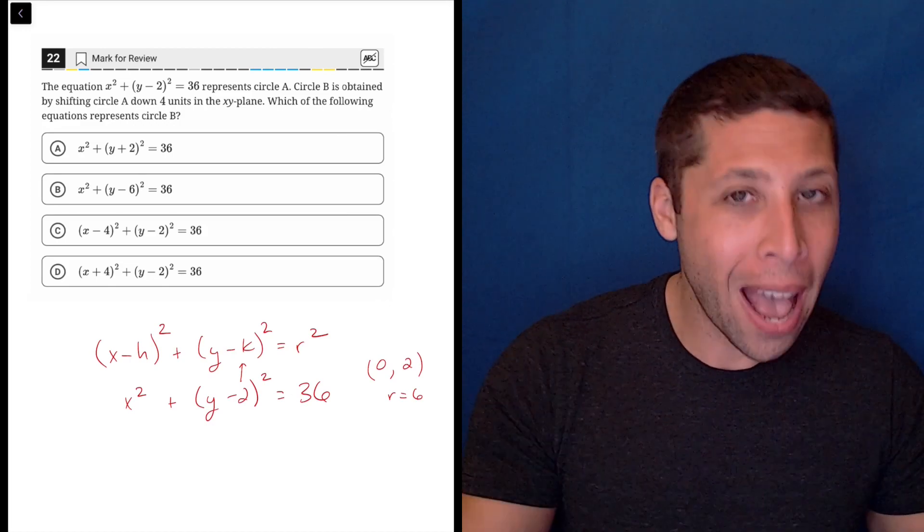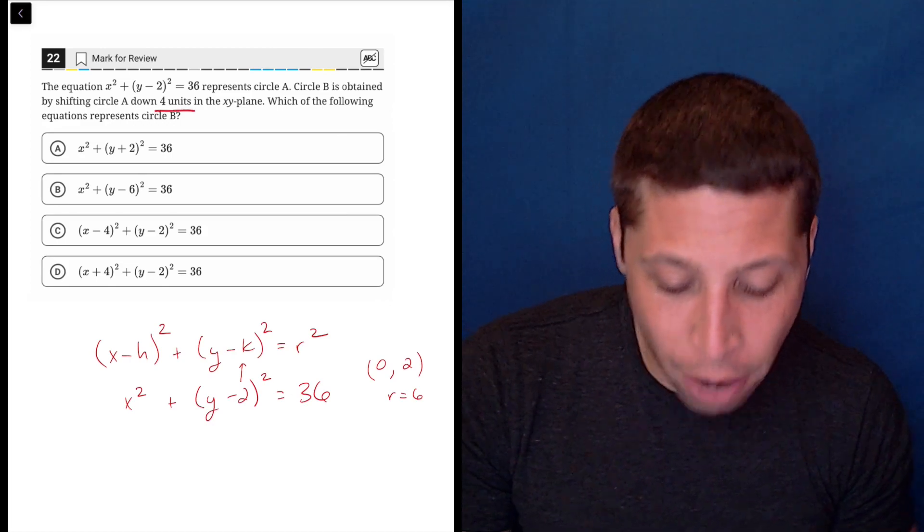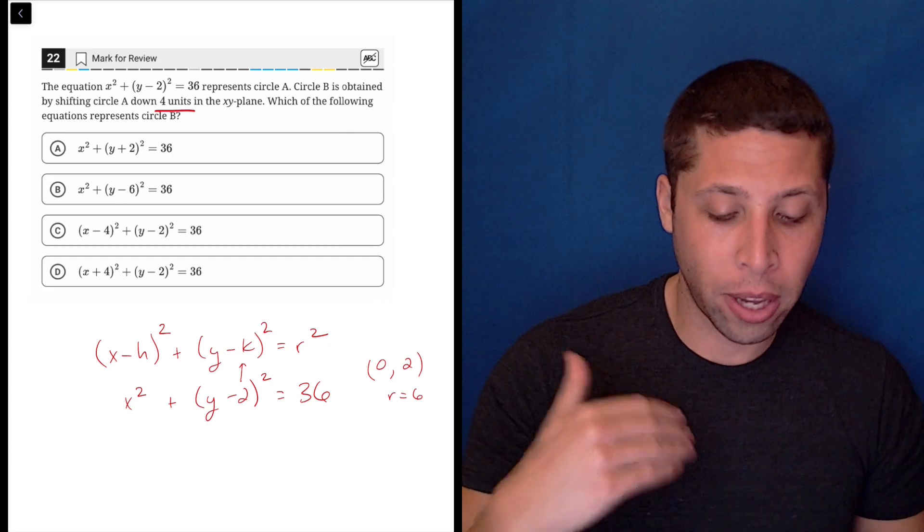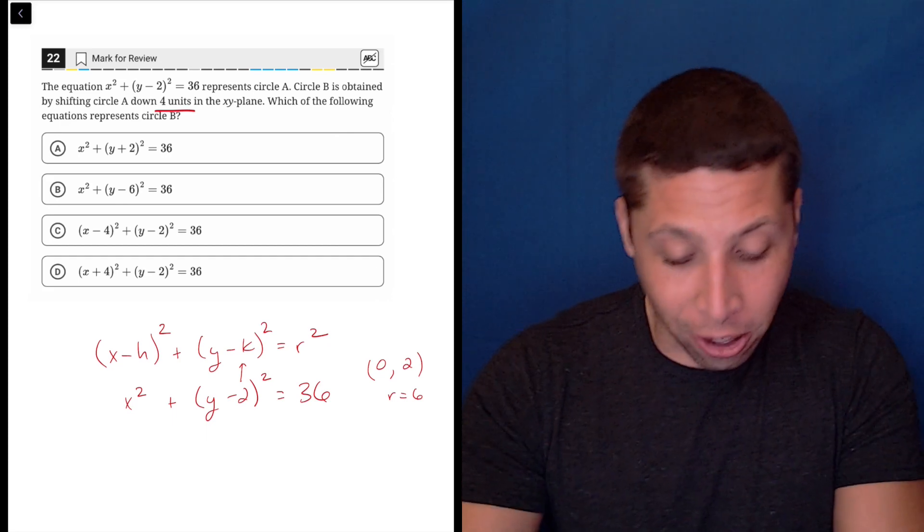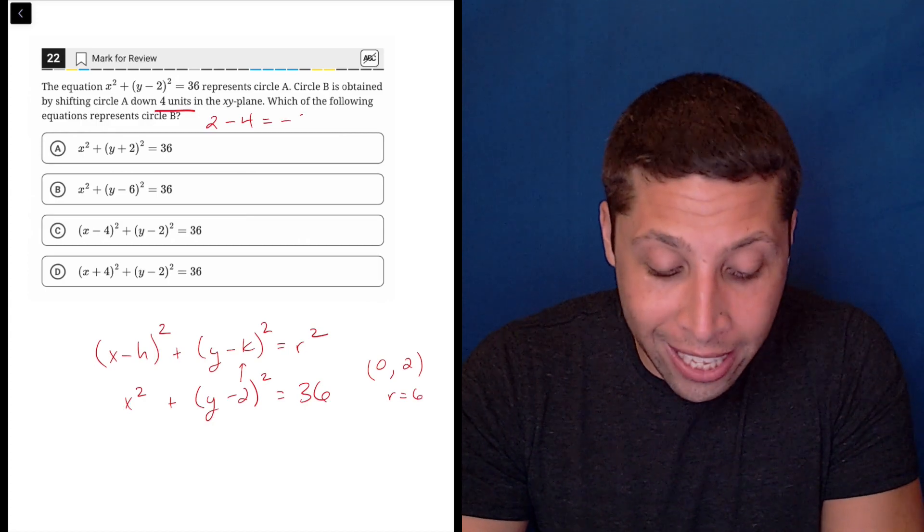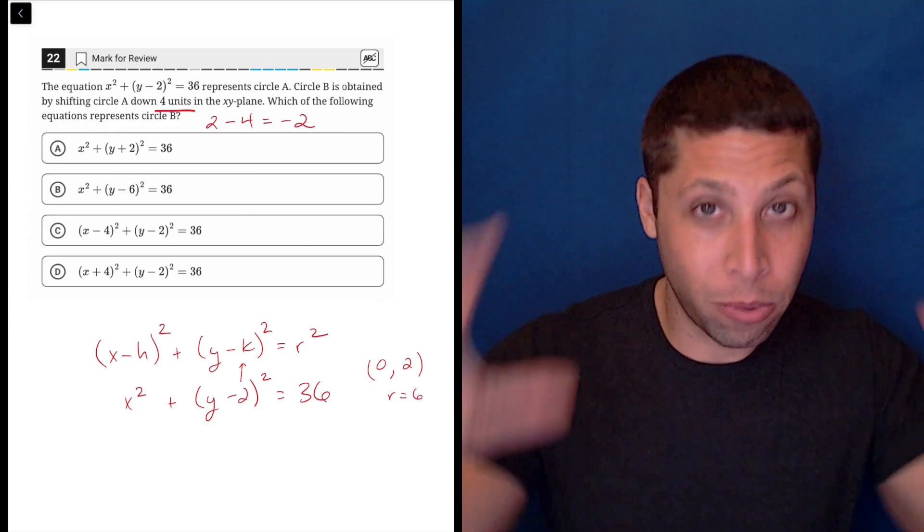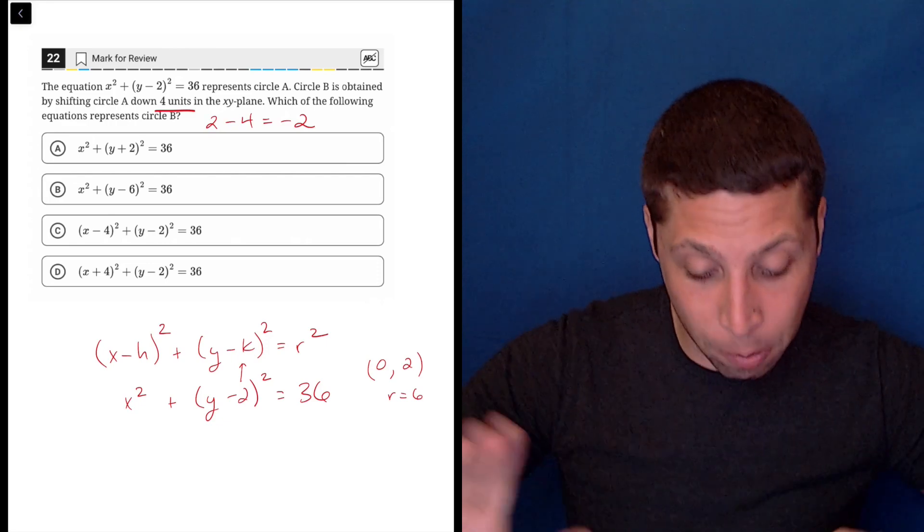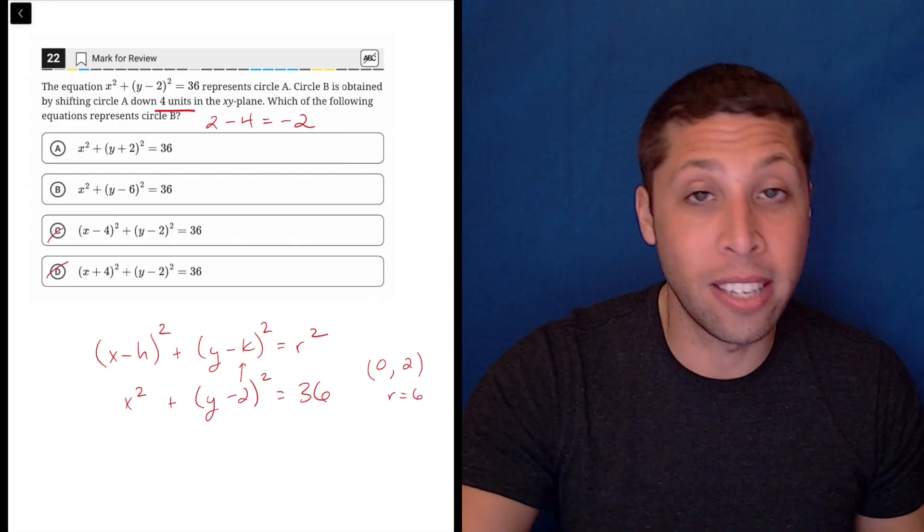So the reason that matters is if we go down 4 units, if we are starting at 2 and we go down 4, we're going to end at negative 2. So down is only going to shift the y. The x part is not going to change. So that's why c and d don't make sense.